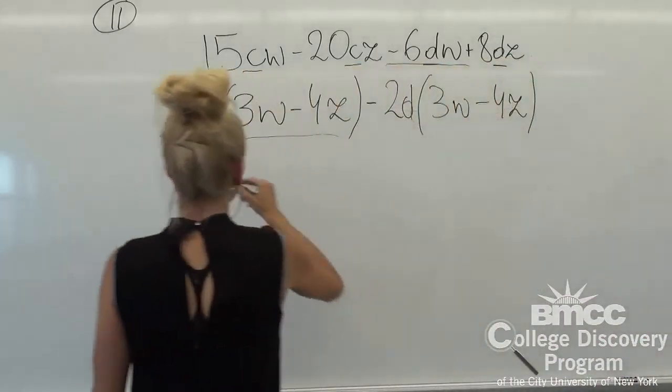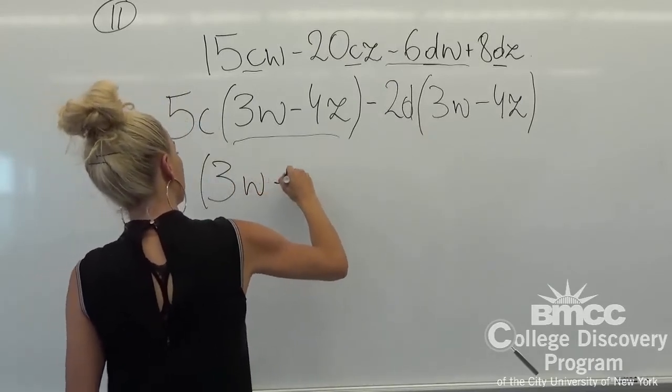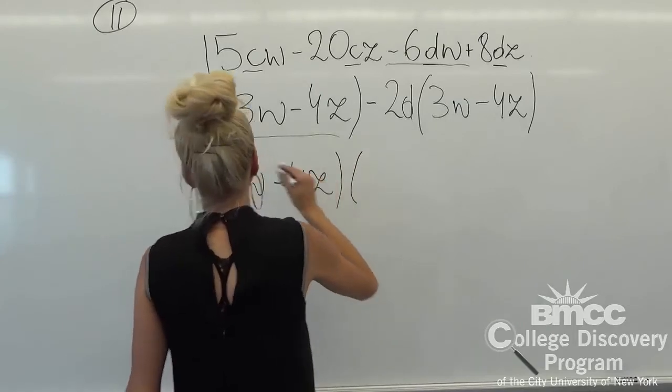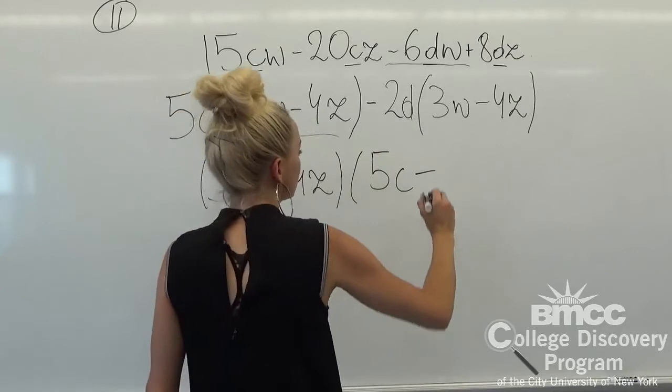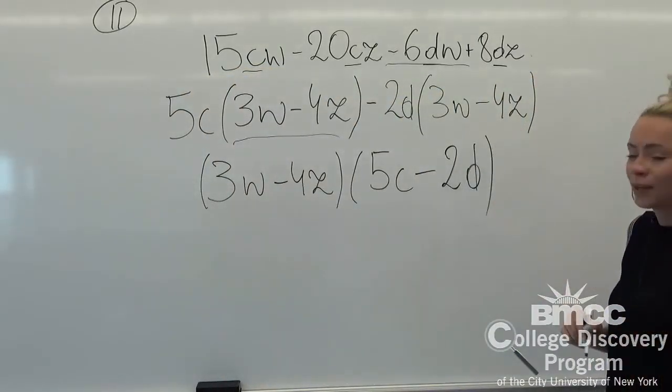Right now we're going to combine our two parentheses into one and write whatever we have left. So we have (5c - 2d) times (3w - 4z).